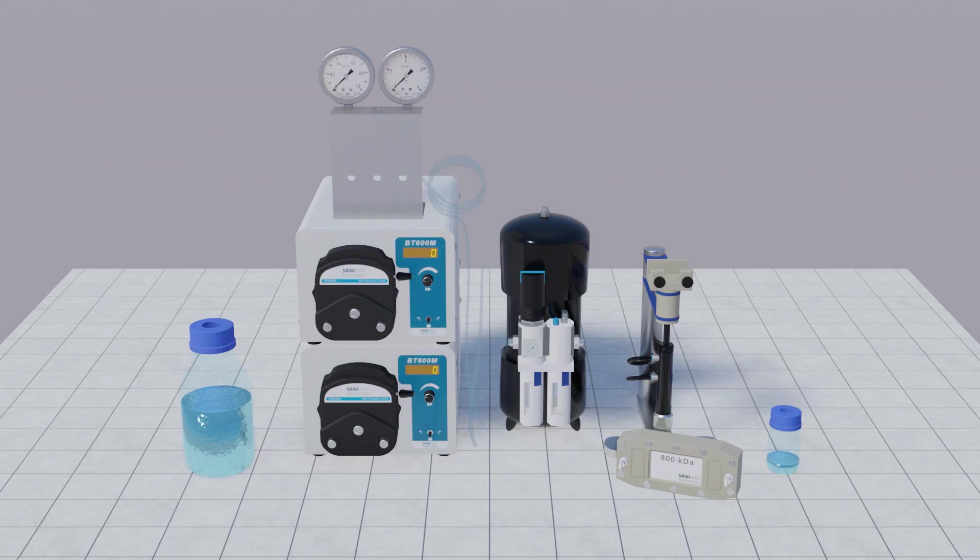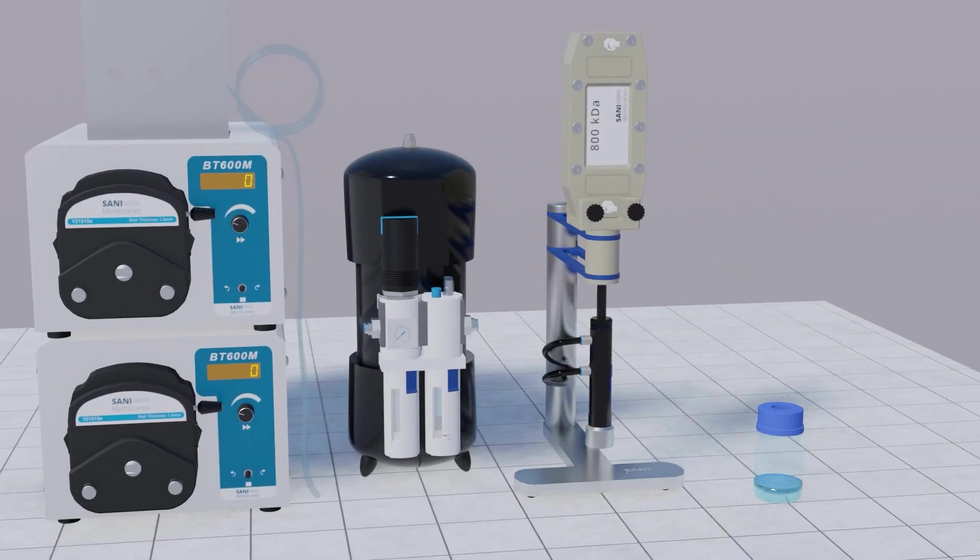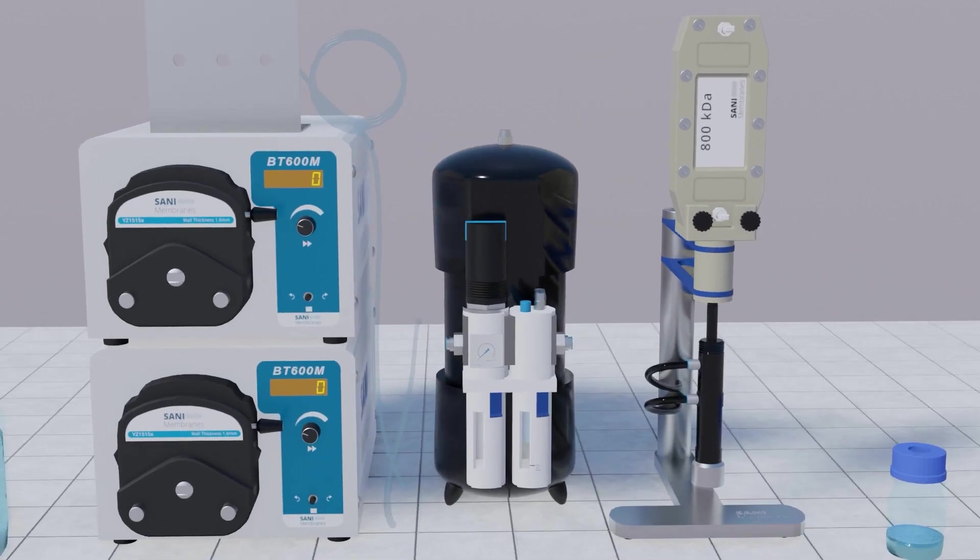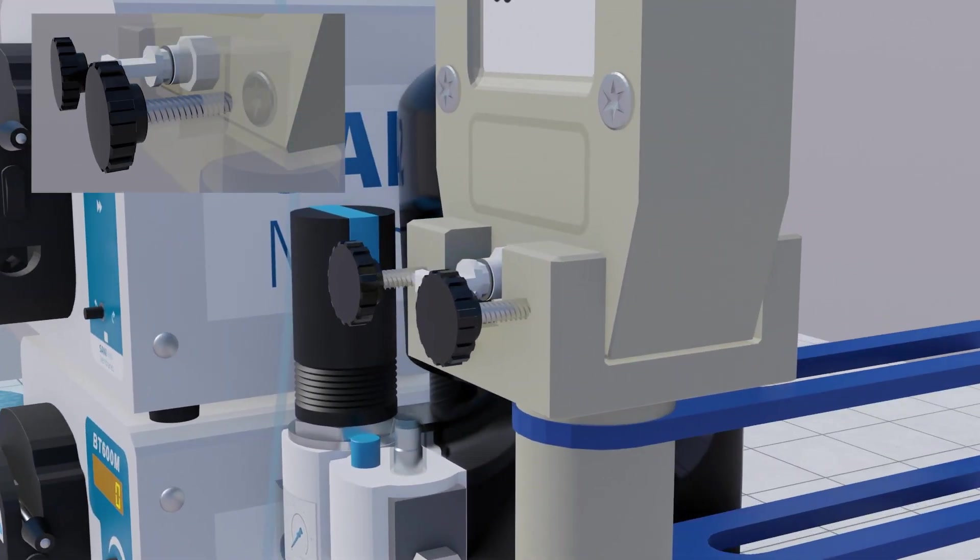Start with placing the membrane module in the Vibro unit. Tighten the screws to secure the module in place.